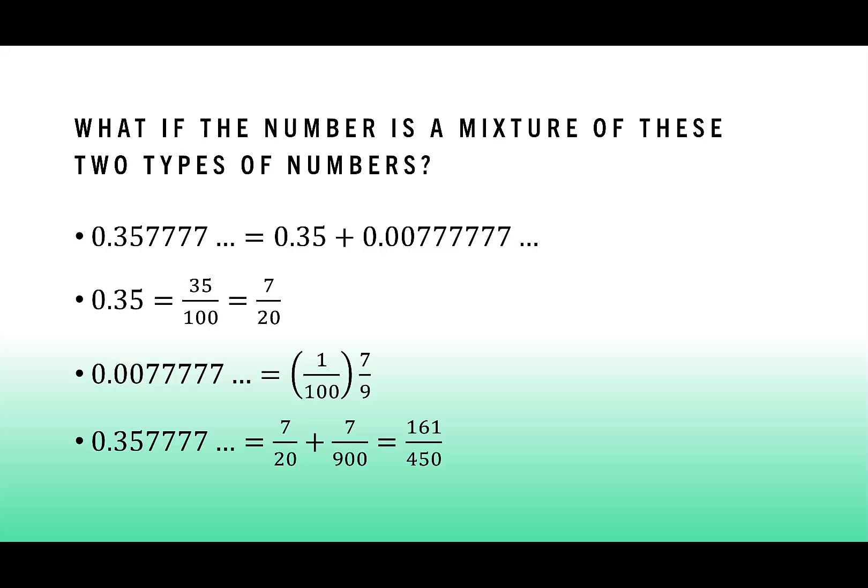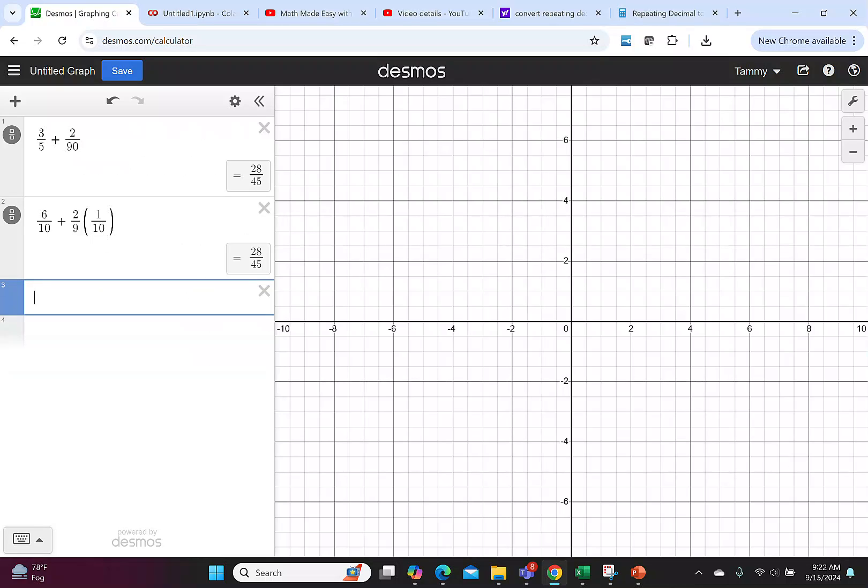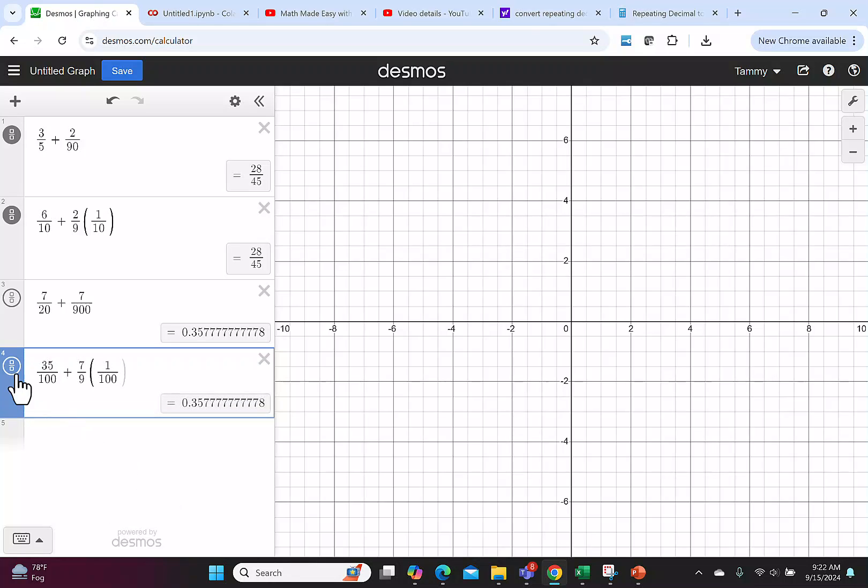Again, let's go back to Desmos to verify that. I have 7 over 20 plus 7 over 900. Again, we could have written this as 35 over 100 plus 7 over 9 times 1 over 100. Clicking on the fraction shows me this is 161 over 450. And I see the same thing in the one before.